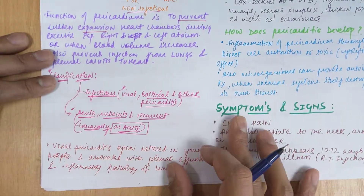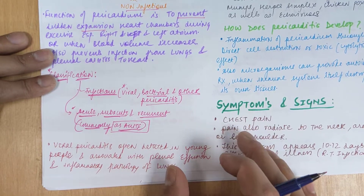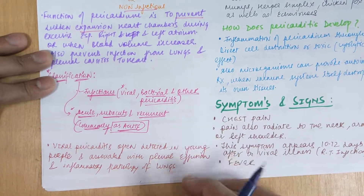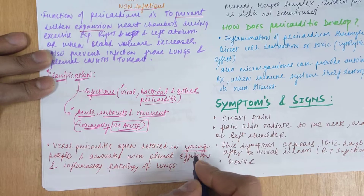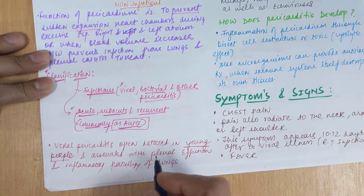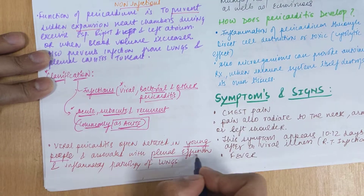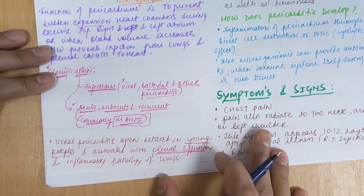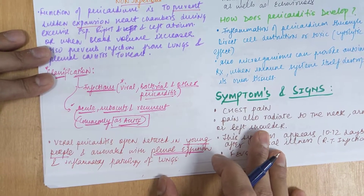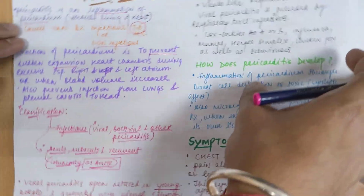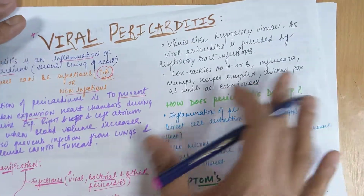Viral pericarditis is most often detected in young people. It is associated with pleural effusion, which is the most common sign seen in patients with viral pericarditis, along with inflammatory pathology of the lungs.